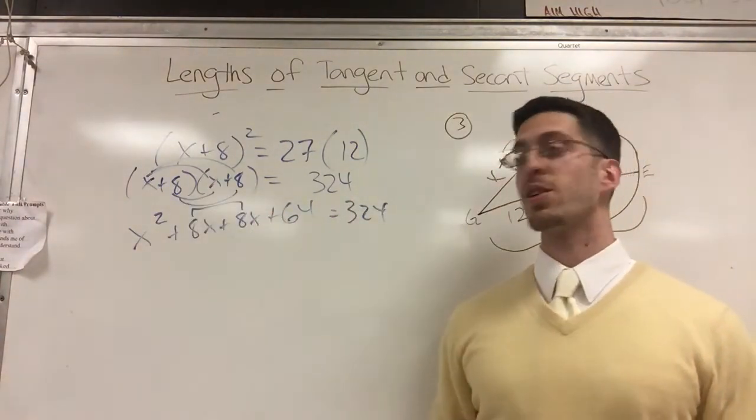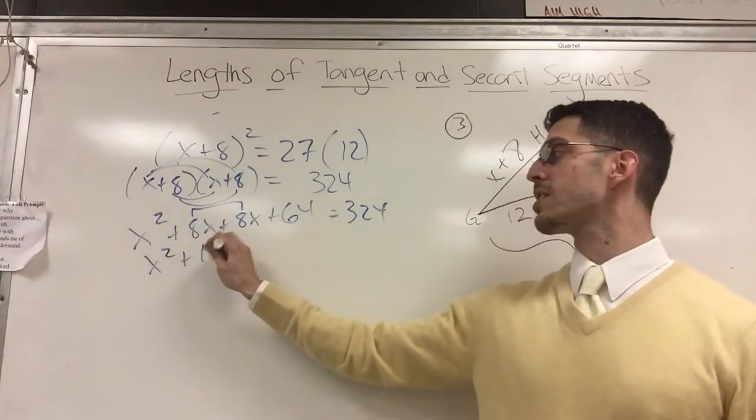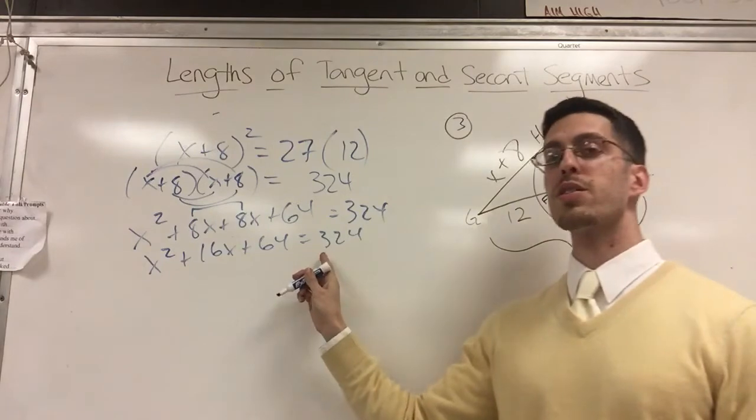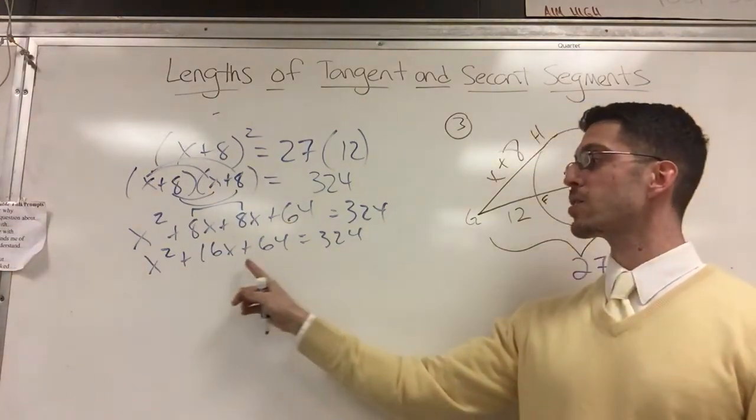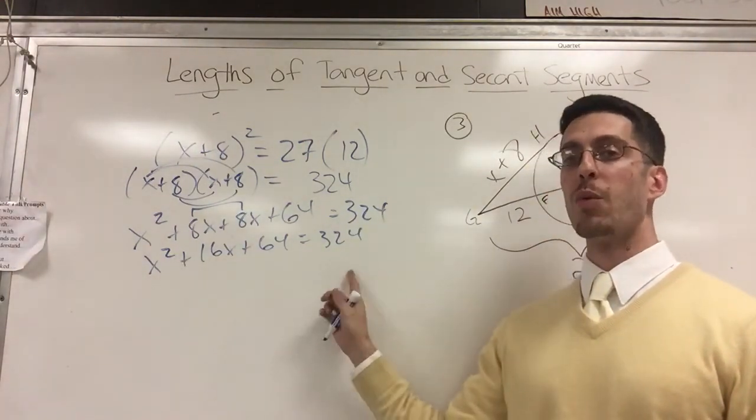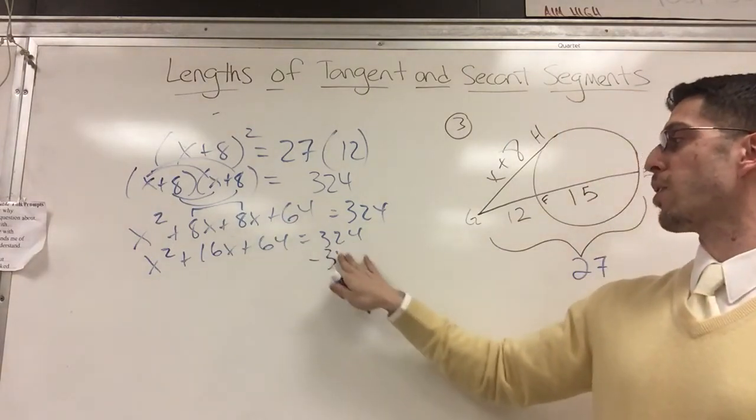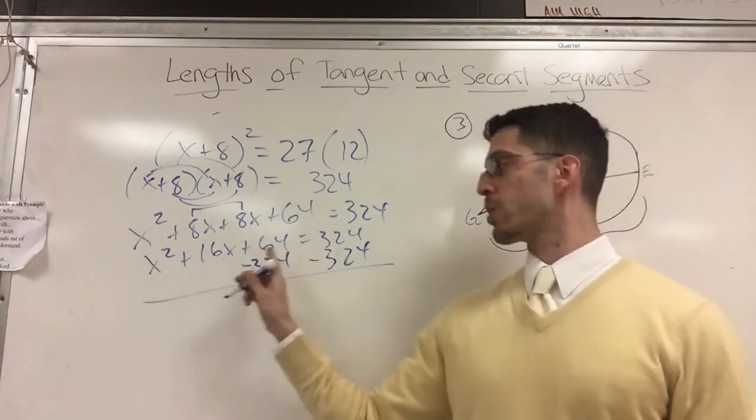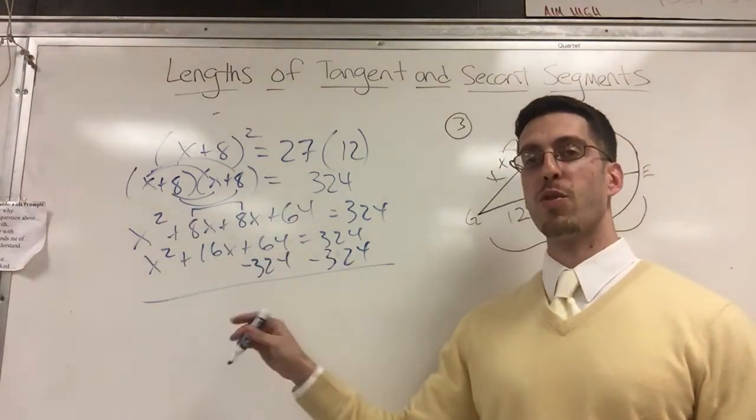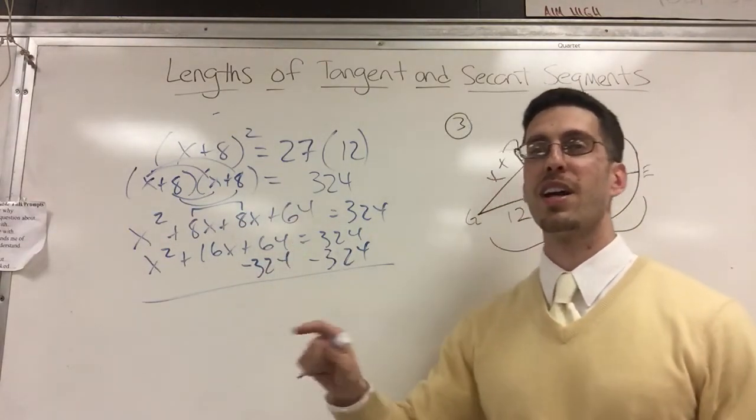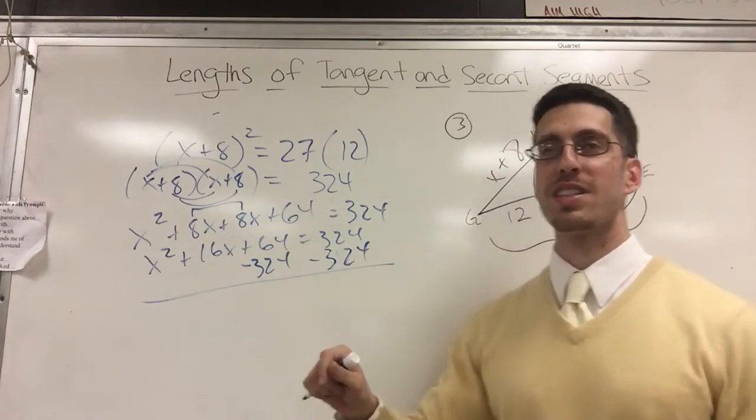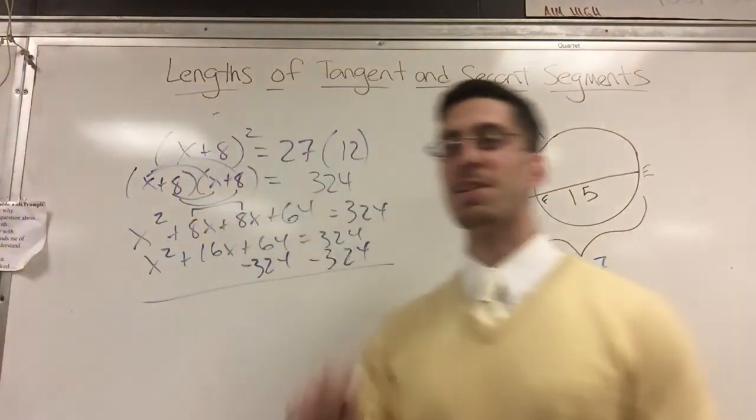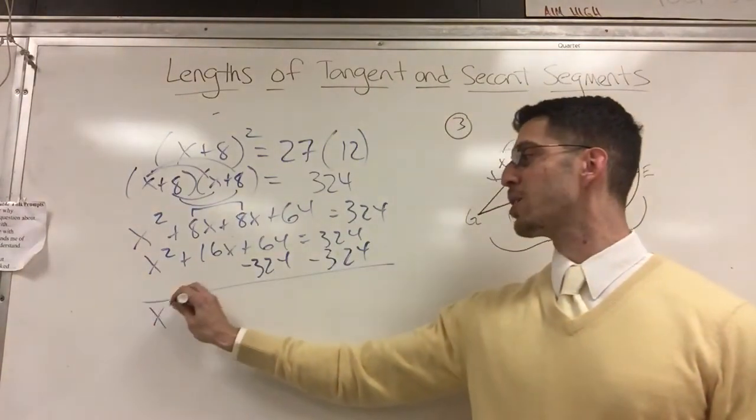Equals 324 drops down. Combine like terms: x squared plus 16x plus 64 equals 324. Now here is something I haven't done in a long time - this is called a quadratic equation. I want this side to equal zero, so I'm going to subtract 324. I'm doing 64 minus 324. Let me go to my calculator here. I'm going to guess that it's 260. Let me double check: negative 260. X squared plus 16x minus 260 equals zero. Does this look familiar?